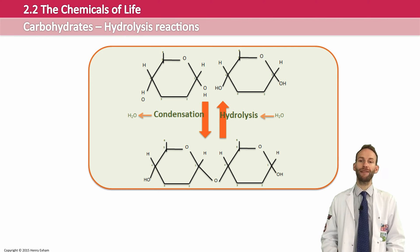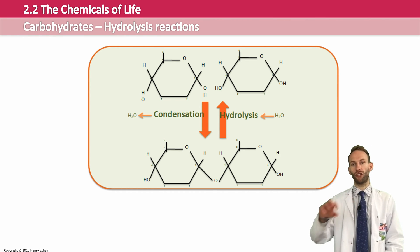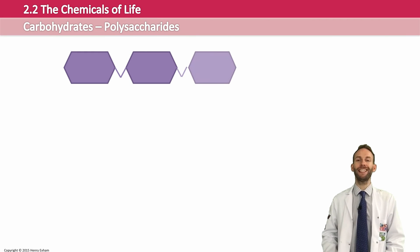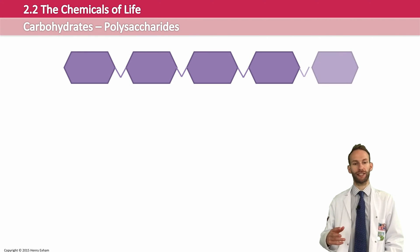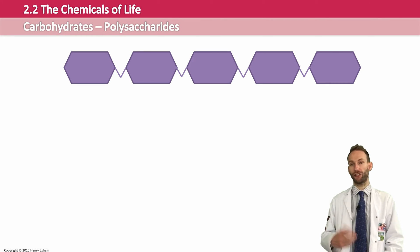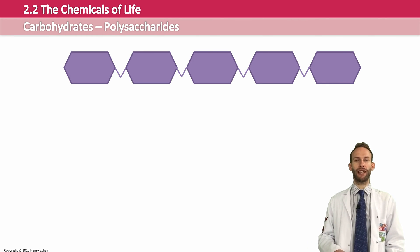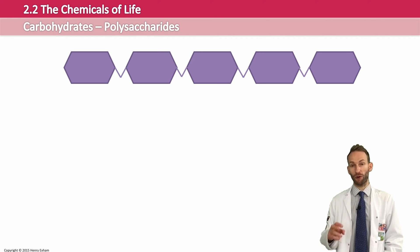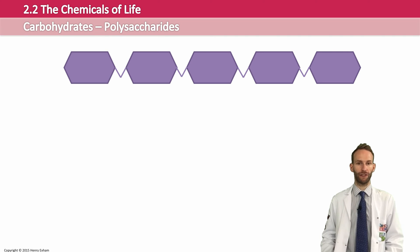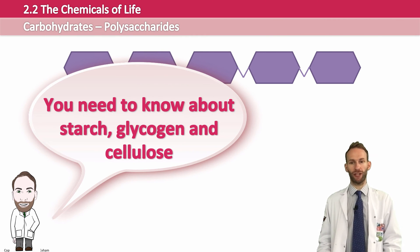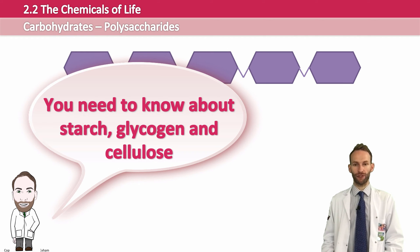If you continue joining monosaccharides together into long chains, you can end up with a polysaccharide. These are perfect for storing sugar in a cell because they are insoluble due to their size, so they do not affect the water potential and osmosis is unaffected. They can also be quite compact and take up little space, which is also very good for the cell. You need to know specifically about three polysaccharides: starch, glycogen, and cellulose.